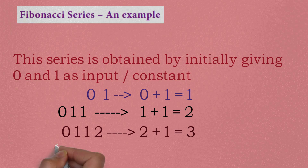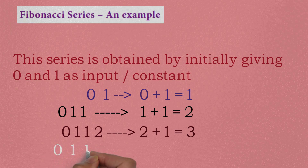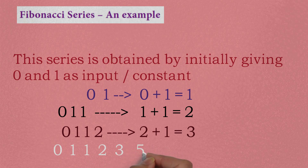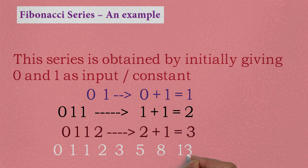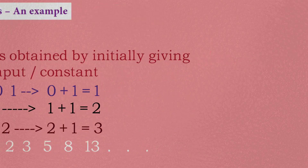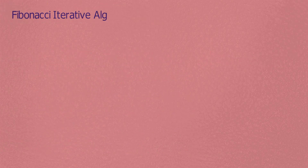This is the Fibonacci series. How do we add Fibonacci series? 0, 1, 0 plus 1 equals 1, 1 plus 1 equals 2, 2 plus 1 equals 3, 3 plus 2 equals 5, 5 plus 3 equals 8, 8 plus 5 equals 13. Fibonacci is an iterative algorithm with a dynamic programming approach.